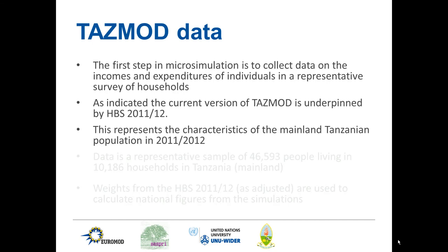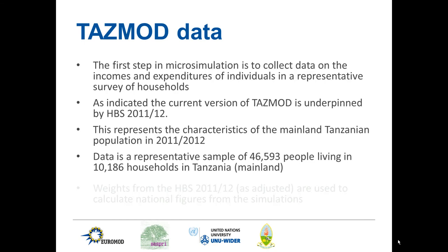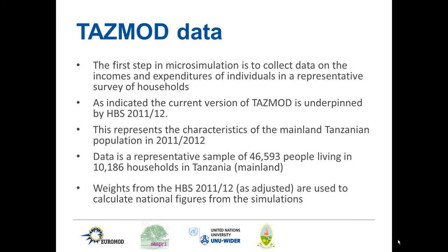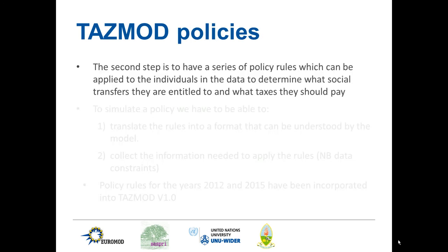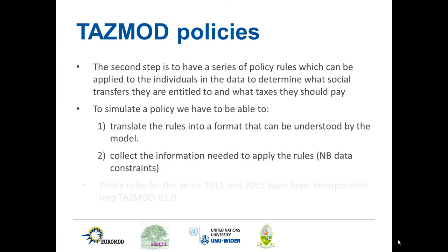The HBS 2011-2012 is a representative sample of 46,593 people living in 10,186 households in the Tanzanian mainland. The weights from the HBS 2011-2012, as adjusted, are used to calculate national figures from the simulations — impacts on poverty, inequality, and cost. The first step is to have a set of policy rules that can be applied to individuals in the data to determine what social transfers they are entitled to and what taxes they should pay. In order to simulate a policy, we have to be able to translate the rules into a format that can be understood by the model.